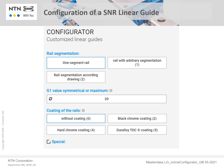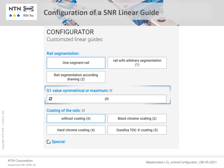There are a few more options for the rail. The rail segmentation is selected below. In the case of short rails, it is usually the same as the preset one-piece or one-segment rail. The G1 value is the position of the first hole from one end of the rail. It is preset with a standard dimension for each rail length, however it can be changed as required.